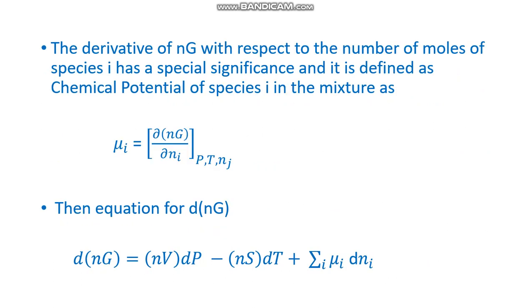The derivative of nG with respect to the number of moles of species i has a special significance and is defined as chemical potential of species i in the mixture as μi = [∂(nG)/∂ni] at constant P,T,nj.